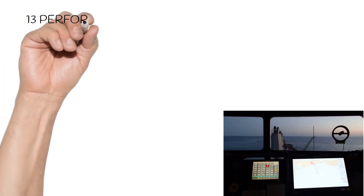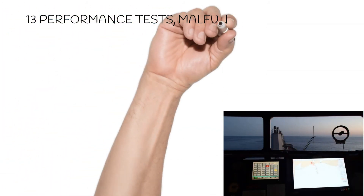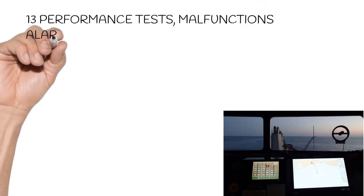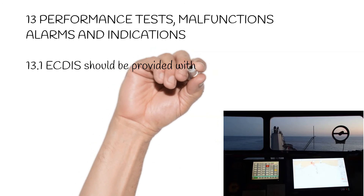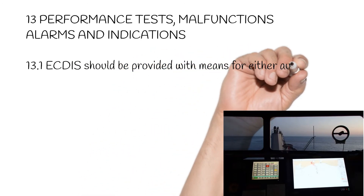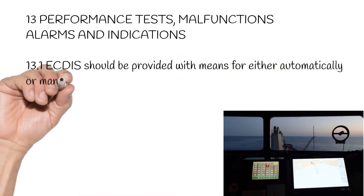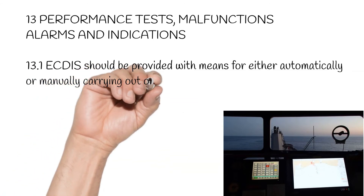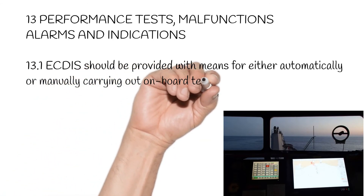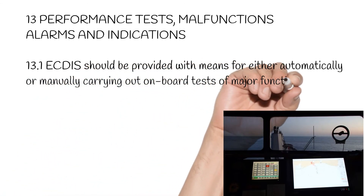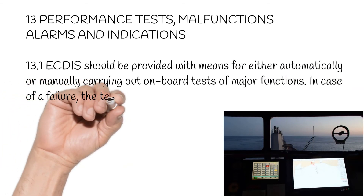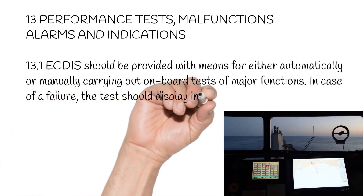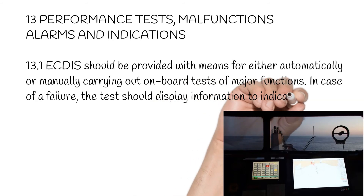Section 13: Performance Tests, Malfunctions, Alarms, and Indications. 13.1. ECTIS should be provided with means for either automatically or manually carrying out on-board tests of major functions. In case of a failure, the test should display information to indicate which module is at fault.